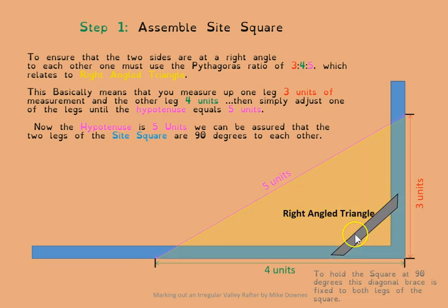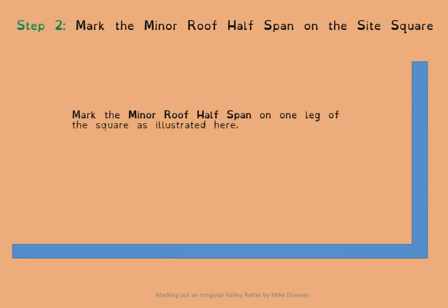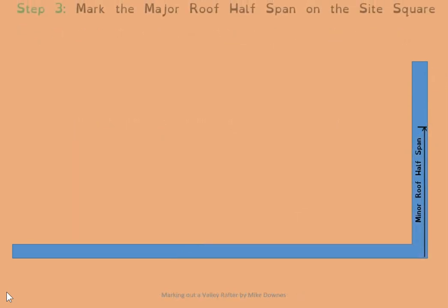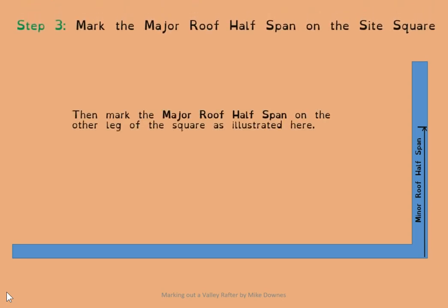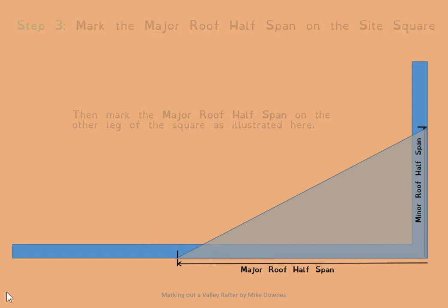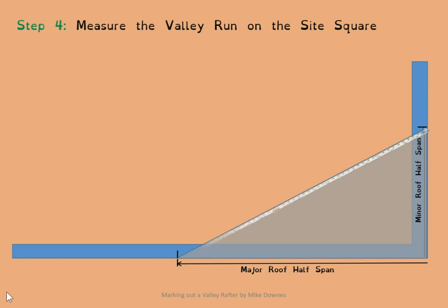The first thing to do is mark the minor roof half span on the side square — you measure up one leg with the measuring tape. Then in the other direction, measure the major roof half span. Once you get the diagonal of those two points, you have the valley run for this particular roof. Remember, the valley run is a horizontal distance — it's on a horizontal plane, not on a slope.